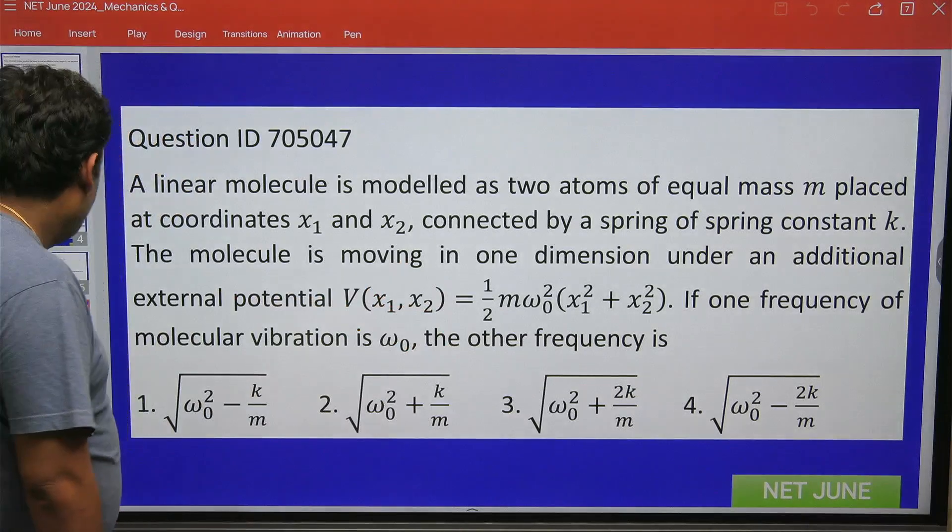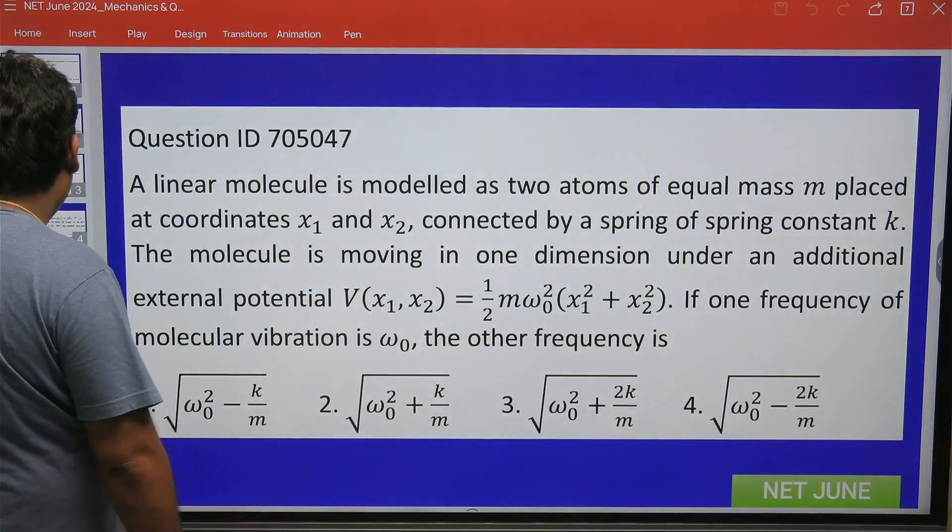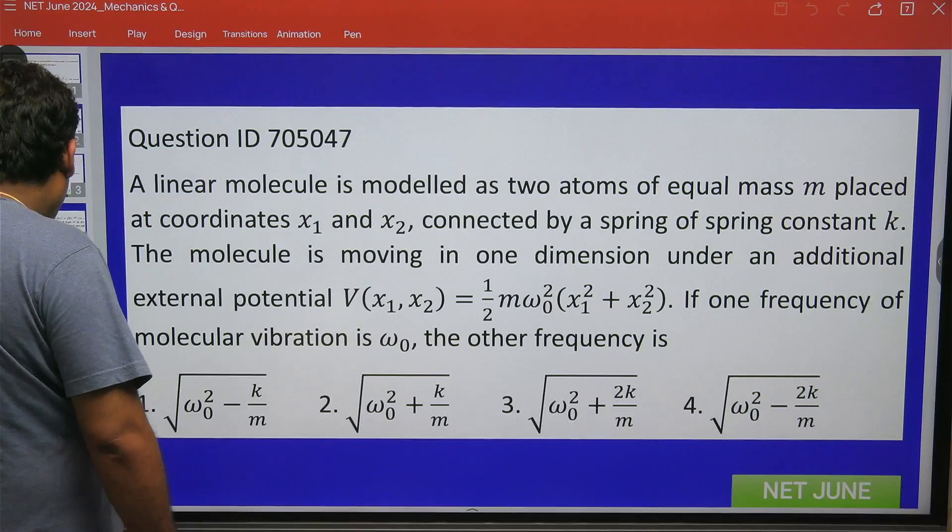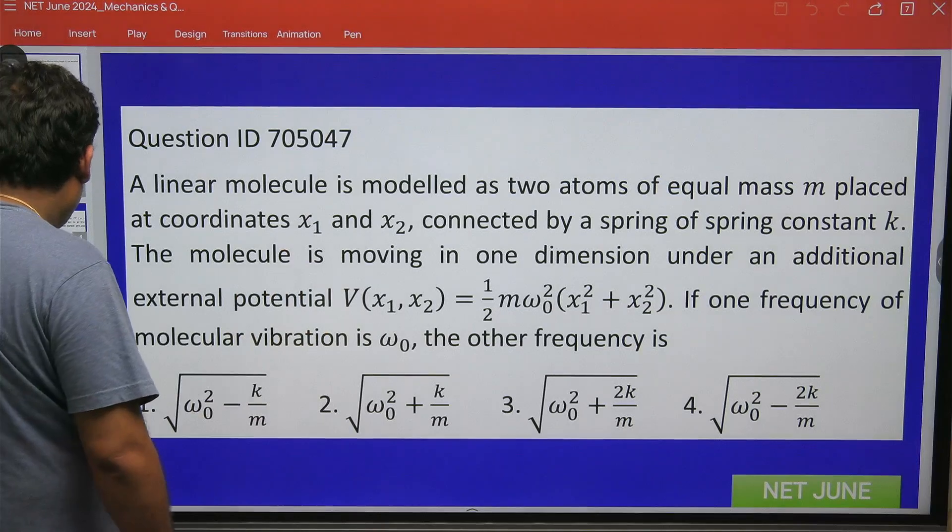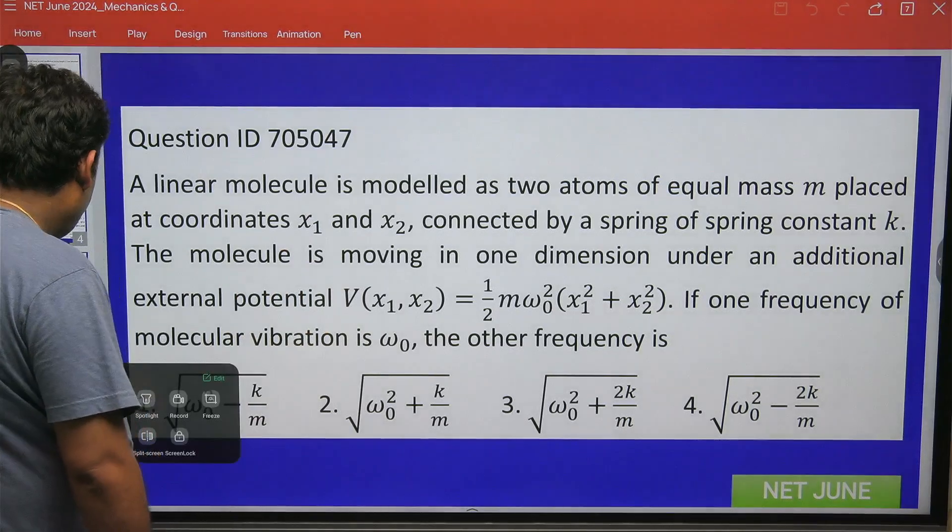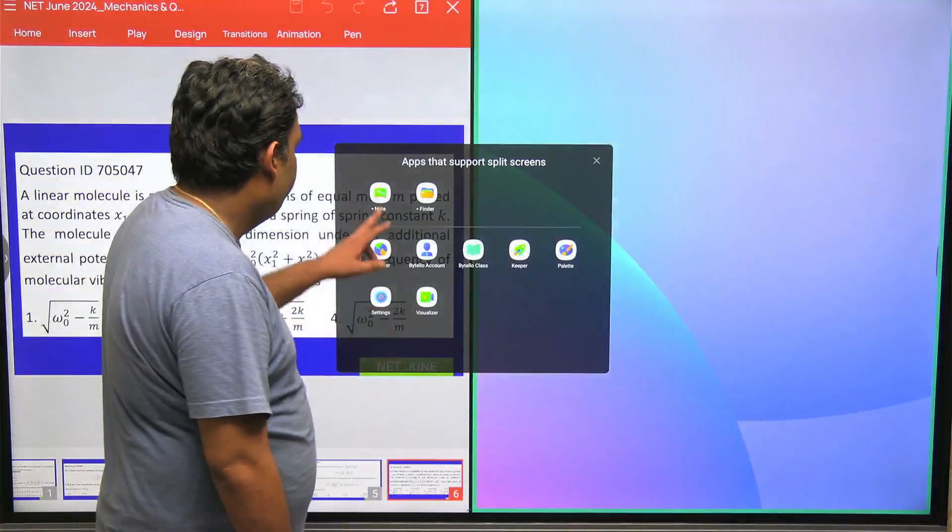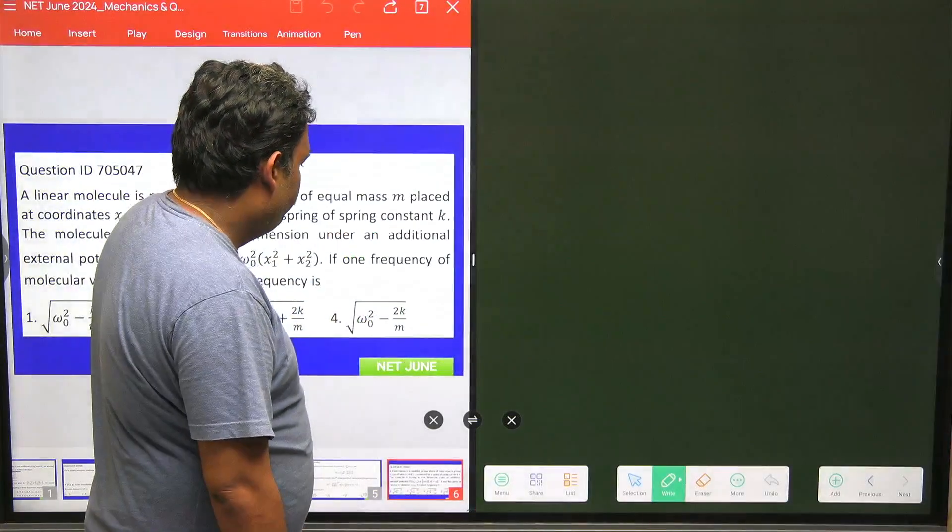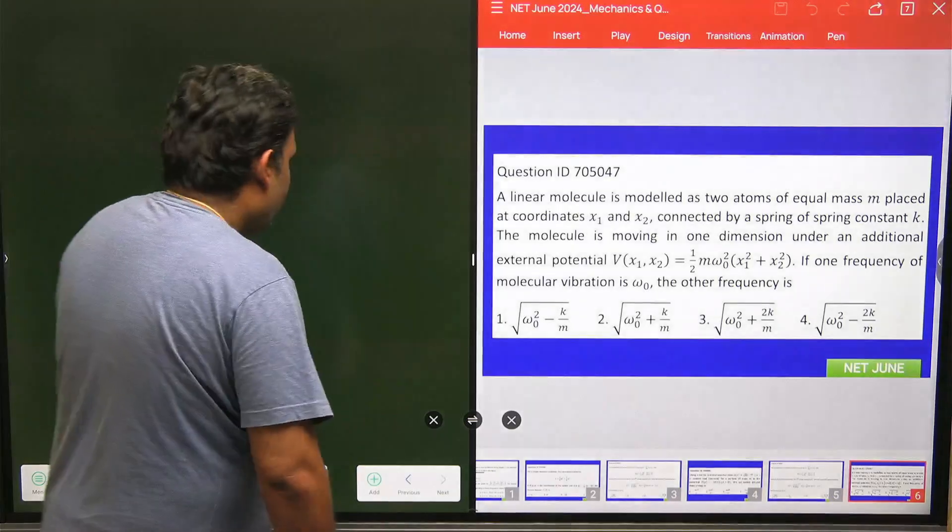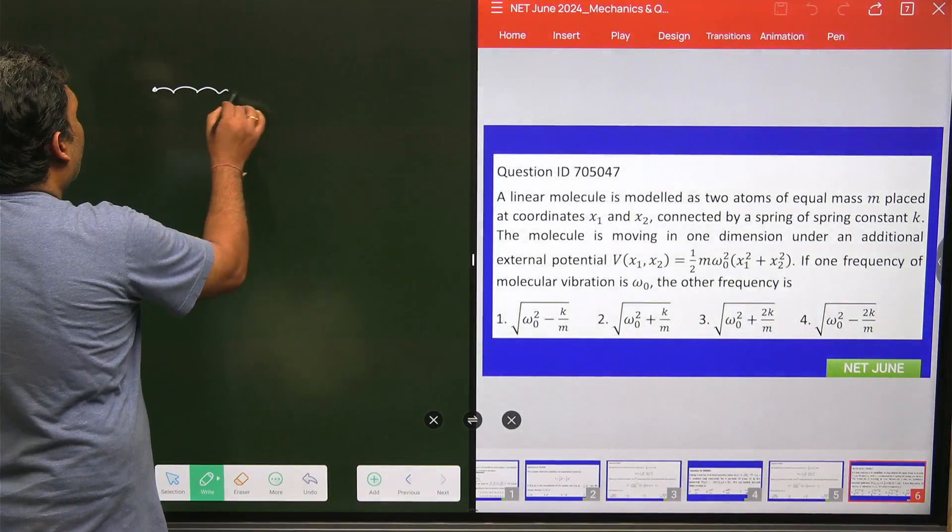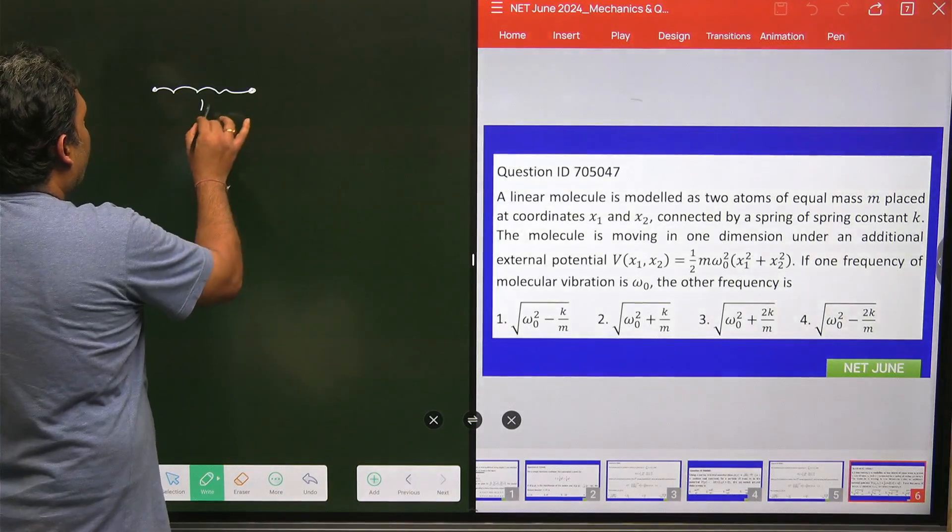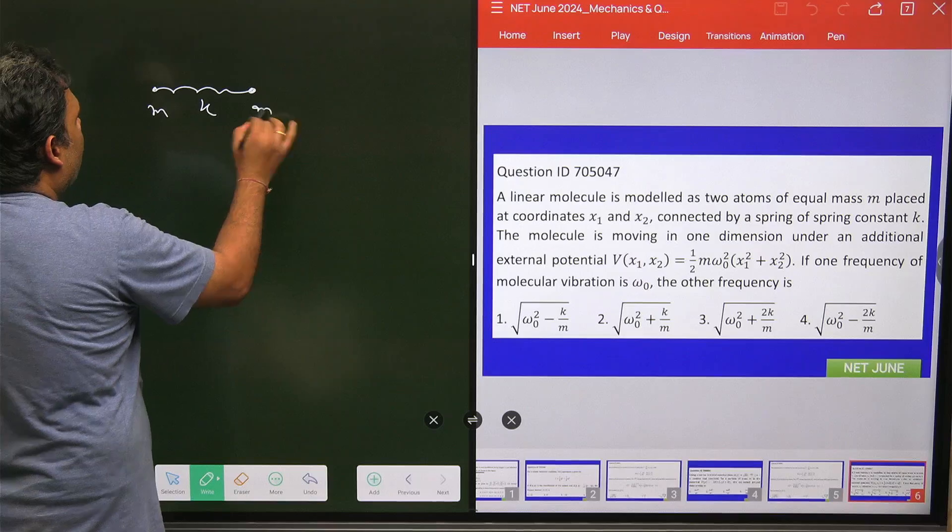What will happen if we are going to solve it completely? Let us see what is going to happen. You have one diatomic molecule, this is your K, this is your M, this is your M.